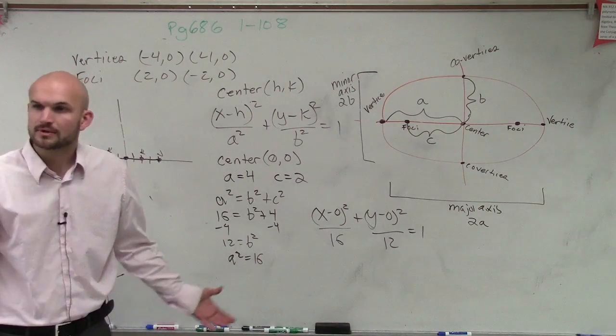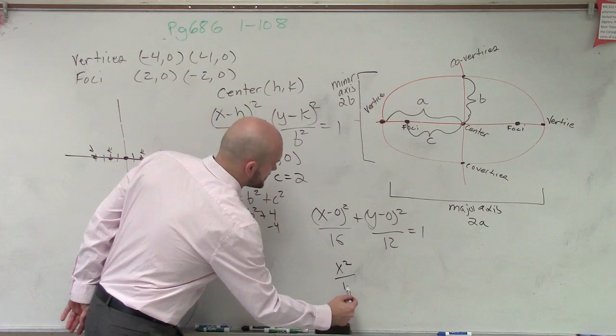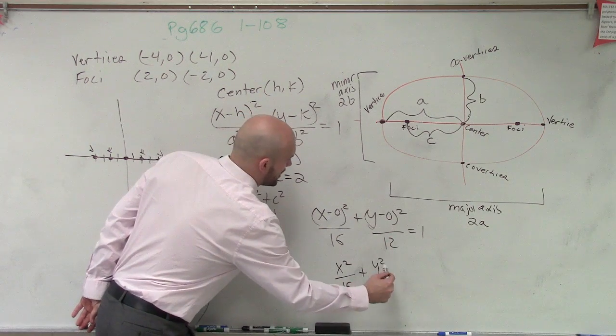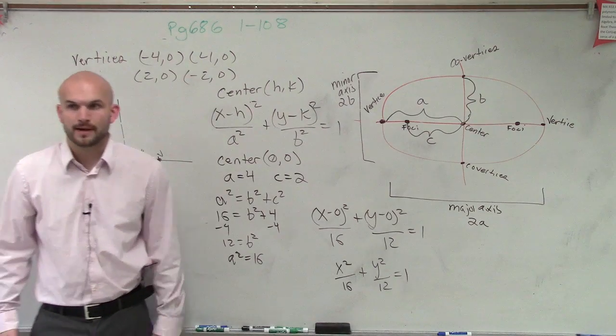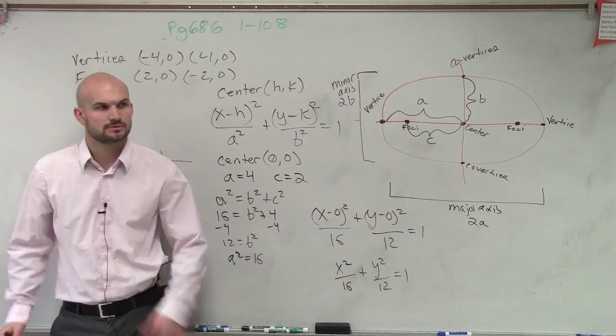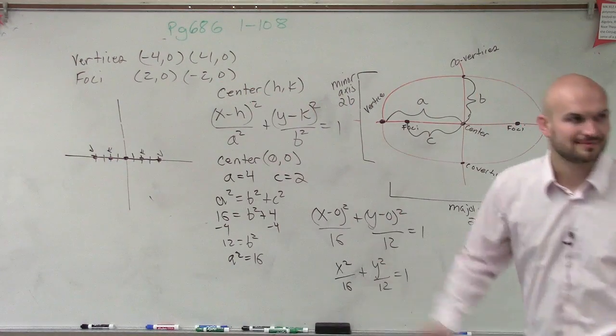And that's it. Now, again, you don't have to write x minus 0. We can just write x squared over 16 plus y squared over 12 equals 1. OK? Any questions?